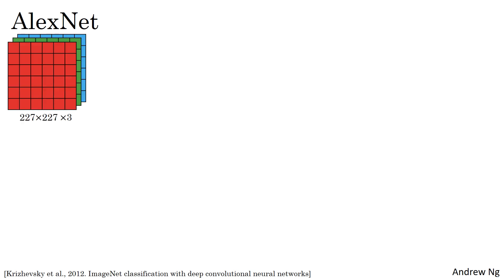The second example of a neural network I want to show you is AlexNet, named after Alex Krizhevsky, who was the first author of the paper describing this work. The other authors were Ilya Sutskever and Geoffrey Hinton. AlexNet starts with 227 by 227 by 3 images. If you read the paper, the paper refers to 224 by 224 by 3 images, but if you look at the numbers, I think the numbers make sense only if they're actually 227 by 227. Then the first layer applies a set of 96, 11 by 11 filters with a stride of 4. Because it uses a large stride of 4, the dimensions shrink to 55 by 55, roughly going down by a factor of 4 because of the large stride.